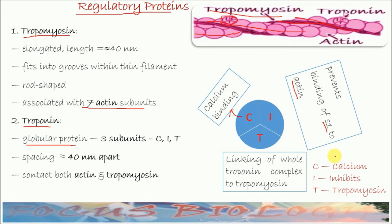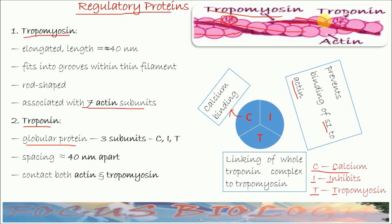We can remember the functions of these three subunits this way: C is for calcium — the C subunit binds calcium. I is for inhibition — the I subunit inhibits binding of the myosin head to actin. T is for tropomyosin — the T subunit is responsible for association of the whole troponin molecule to tropomyosin. The distance between two troponin molecules is about 40 nanometers.